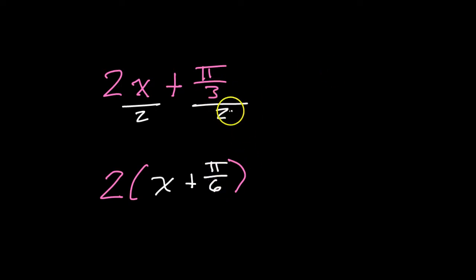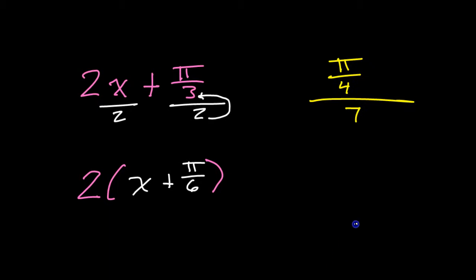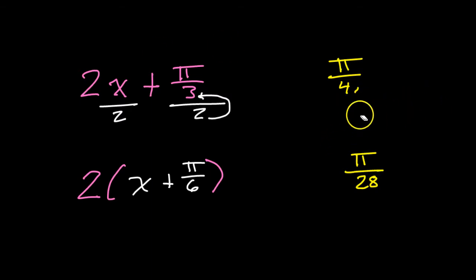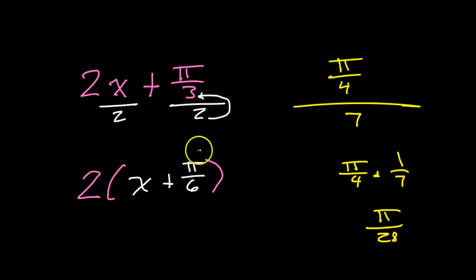When dividing a fraction by a number, you can just multiply by the denominator. So π/3 divided by 2 is π/6. For example, π/4 divided by 7 would be π/28 — that 7 just winds up multiplying in the denominator. The reason: dividing is the same as multiplying by the reciprocal, so π/4 times 1/7 gives π/28.